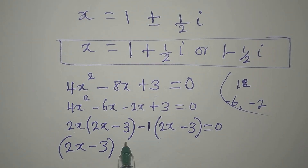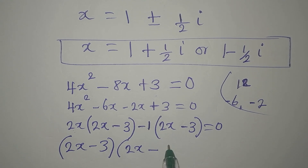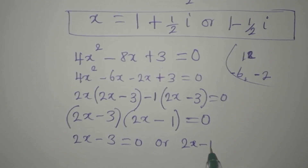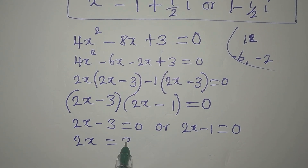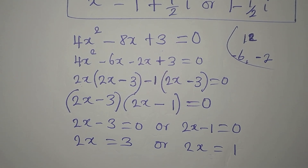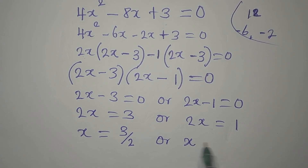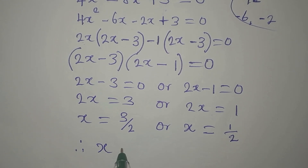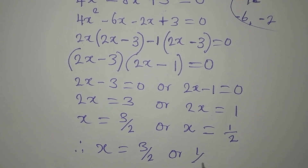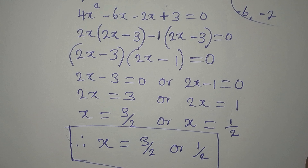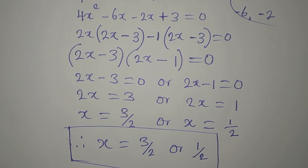So it is either 2x minus 3 equals 0 or 2x minus 1 equals 0. From the first: 2x equals 3, so x equals 3 over 2. From the second: 2x equals 1, so x equals 1 over 2. Therefore x equals 3/2 or x equals 1/2. From here we have two additional real solutions, and by this we have solved this completely. Thank you for watching — subscribe to my channel for more.